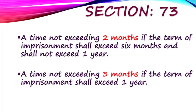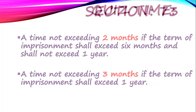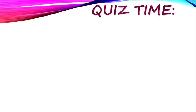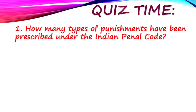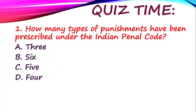Now it is quiz time. Let's see how much you have understood from this video. First question: How many types of punishment have been prescribed under the Indian Penal Code? Is it 3, 6, 5, or 4? Comment your answers below.